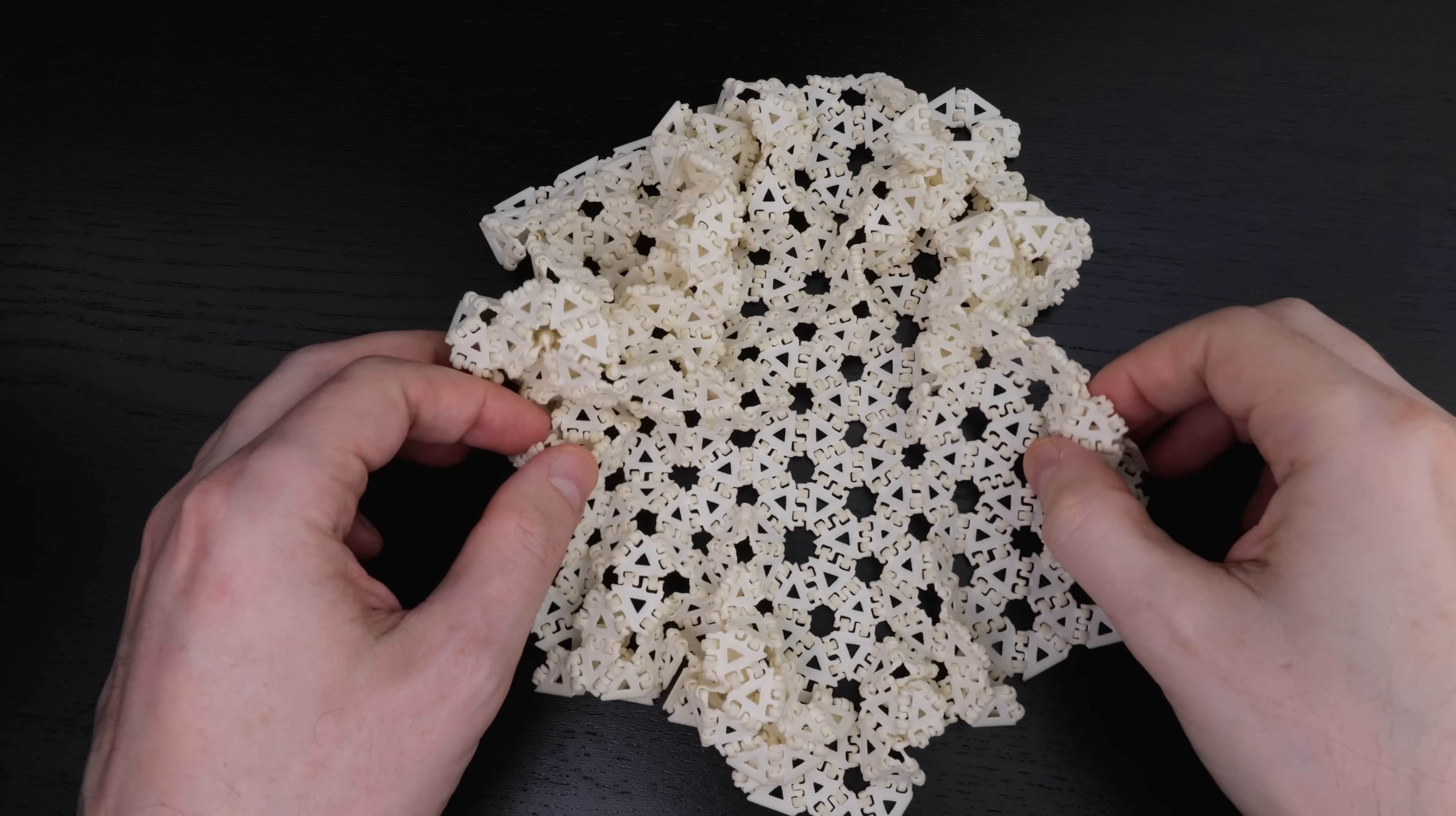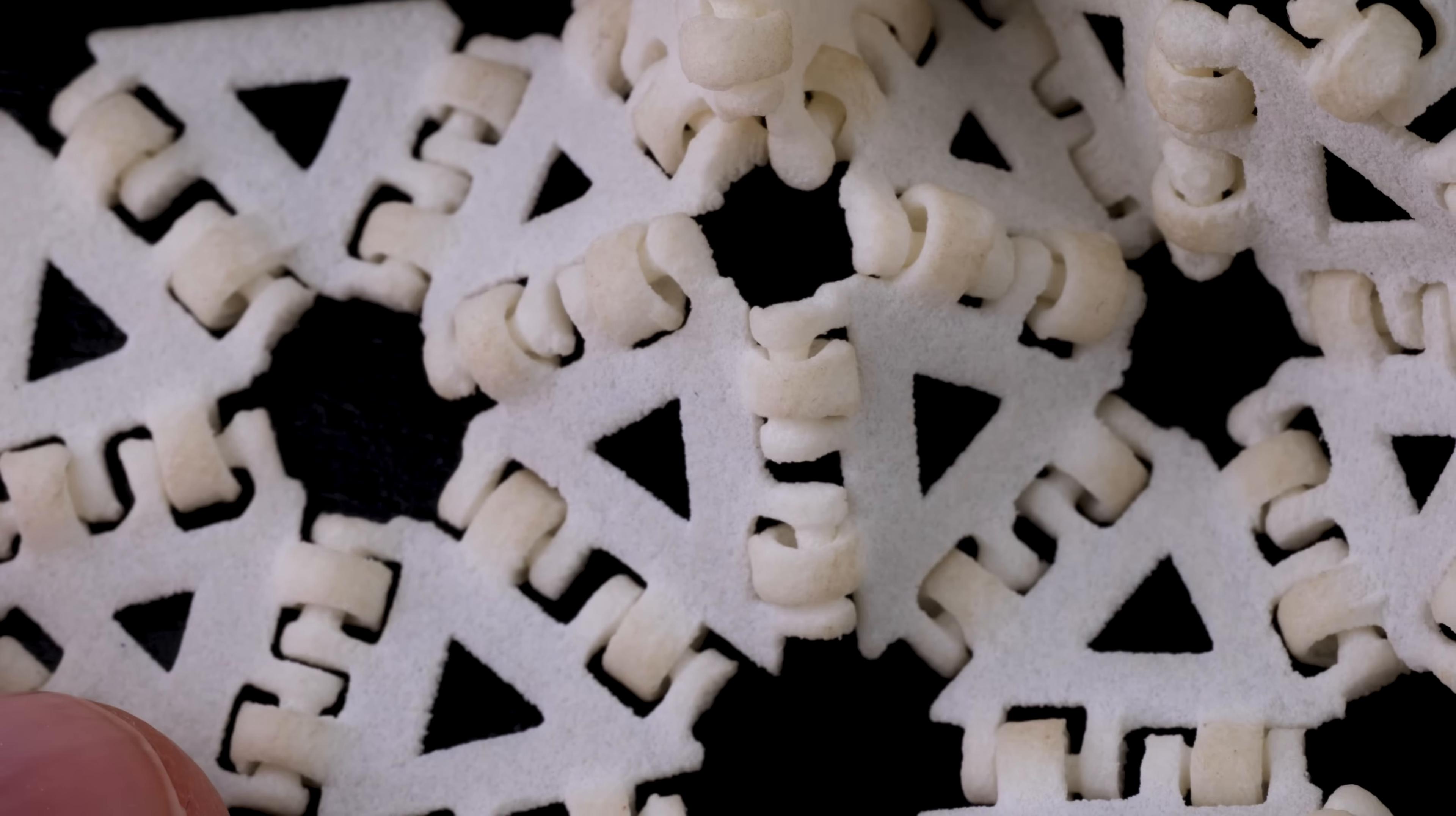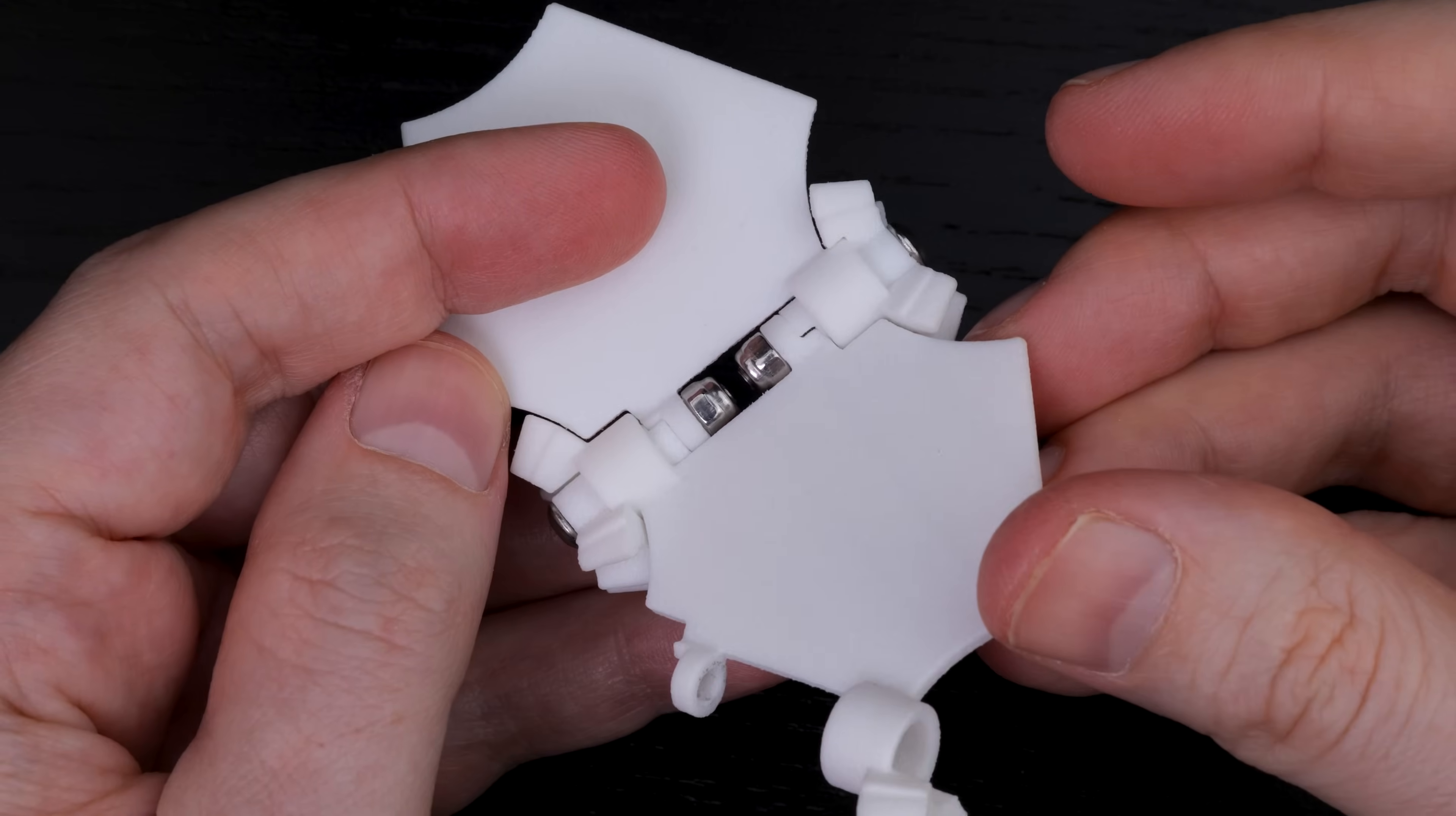One of the many annoying things about the real world is that your design not only has to work, but you also have to be able to get the pieces together in the first place. Print-in-place 3D printing is possible, and I've made mechanisms like that before, but you have to leave a pretty big gap between the different parts, which introduces slop in the hinges.